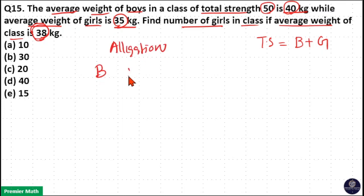So, we need to find out the ratio of boys and girls here, number of boys and girls. Here, average of boys is 40 kg and average of girls is 35 kg. Now, average of the class, that is average of total number of students, is 38. Write it in the center.